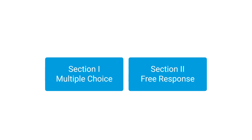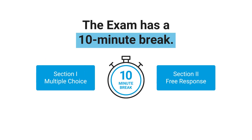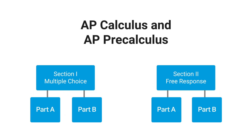All 12 hybrid digital AP exams consist of two sections. Each section and part are timed separately, with a 10-minute break between the sections. For calculus and pre-calculus, both Section 1 and Section 2 are divided into two separately timed parts.